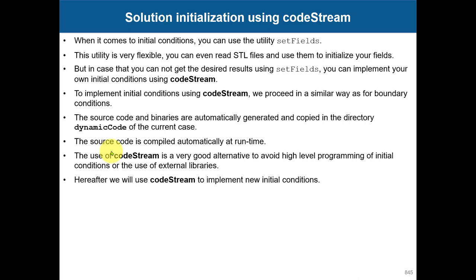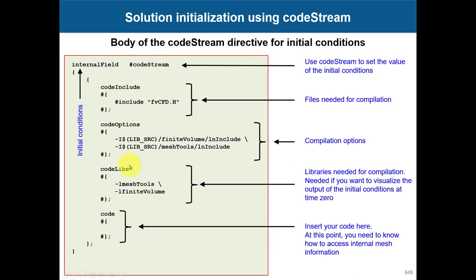Remember, this is something you are going to do just at time zero when you start — it's a one-time operation. As with boundary conditions using codeStream, everything is dynamically compiled. You apply it in the specific field you want to use; in this case it is the entry related to initial conditions. We're going to have a template which is pretty much exactly the same as for boundary conditions — that's another flexibility of codeStream.